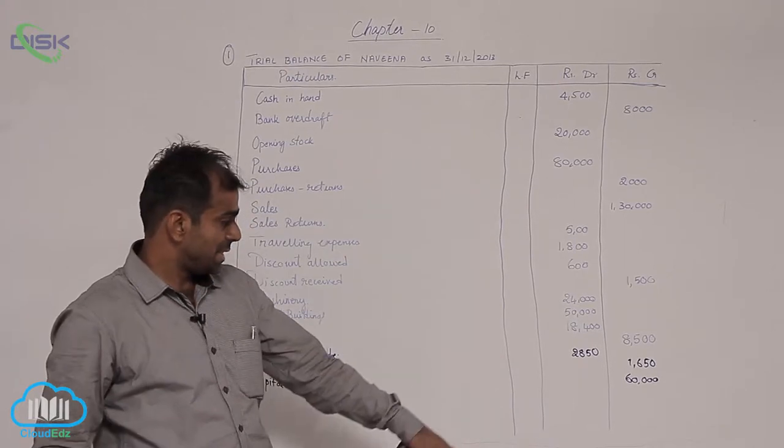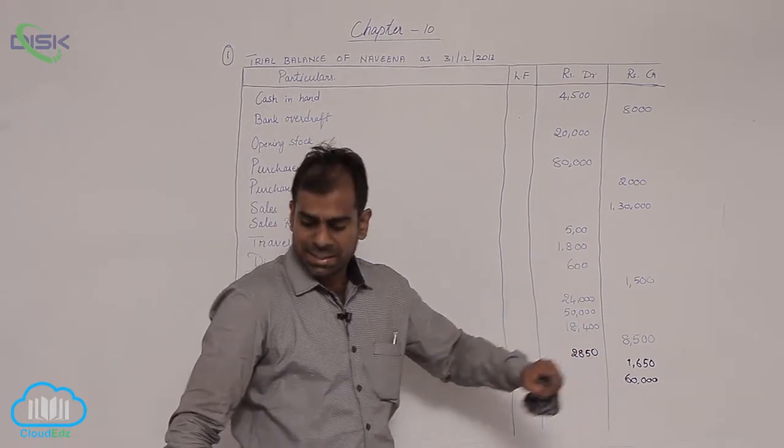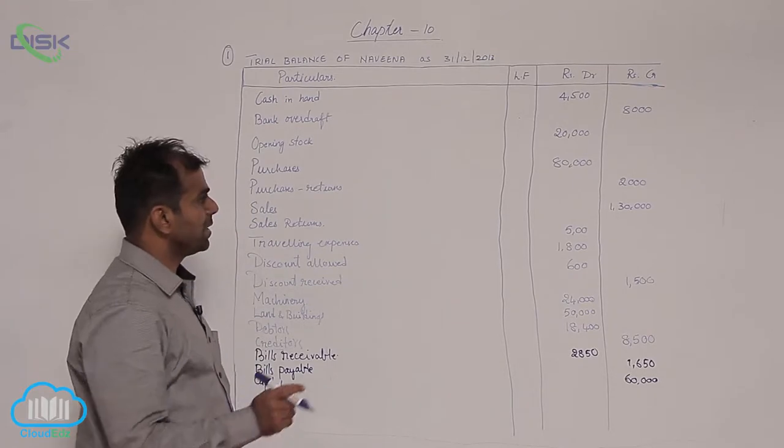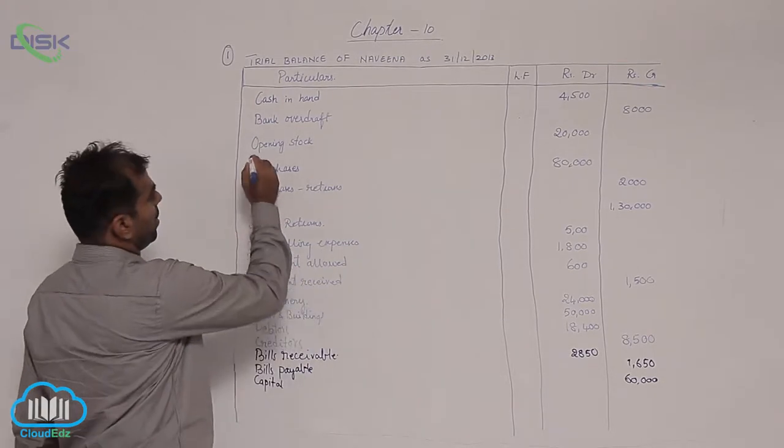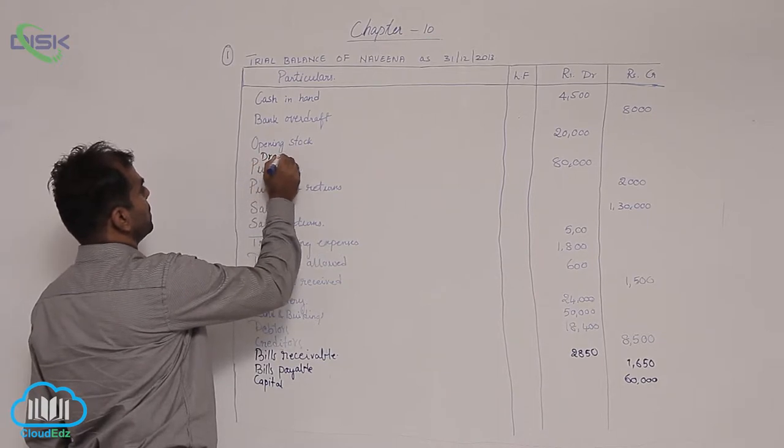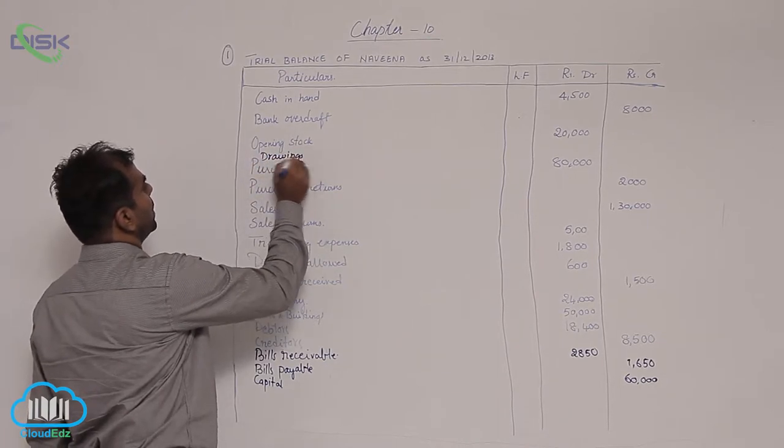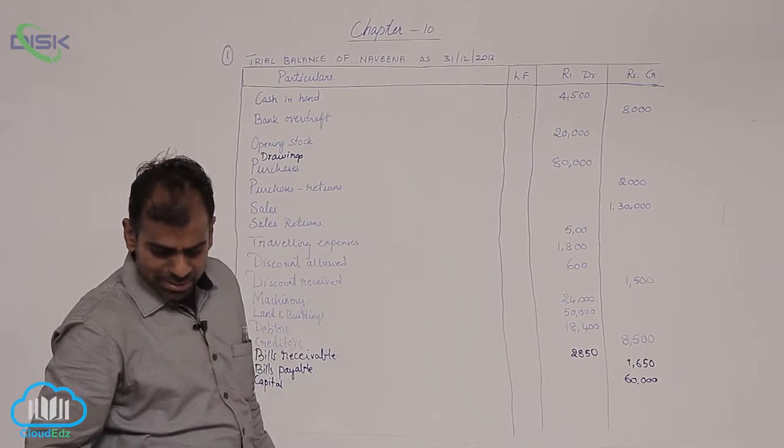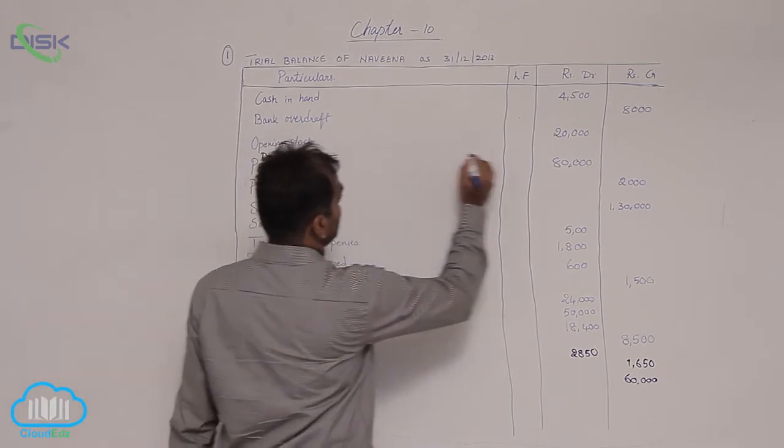Now capital, we said 60,000 credit. Next we have drawings. I will be entering my drawings here - you can enter it down, but due to space constraint I am entering here. Drawings around 6,000. So drawings shows debit balance 6,000.